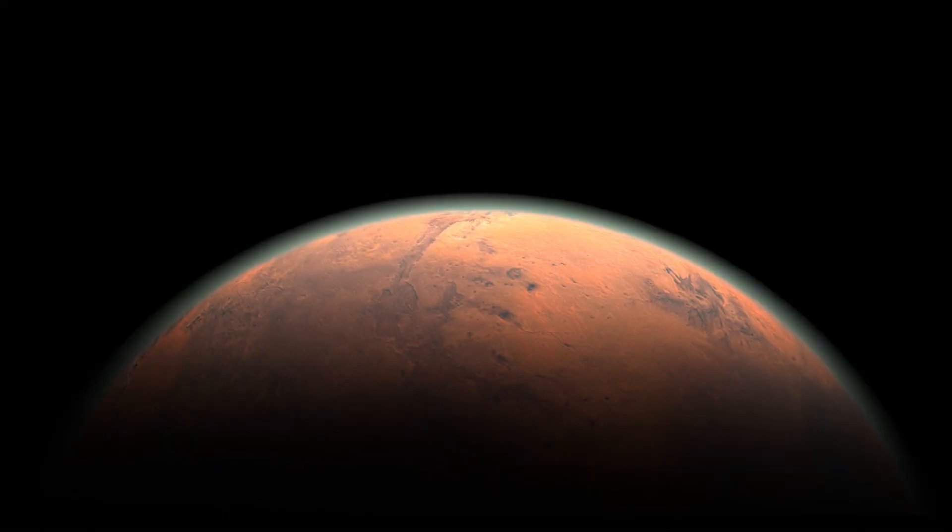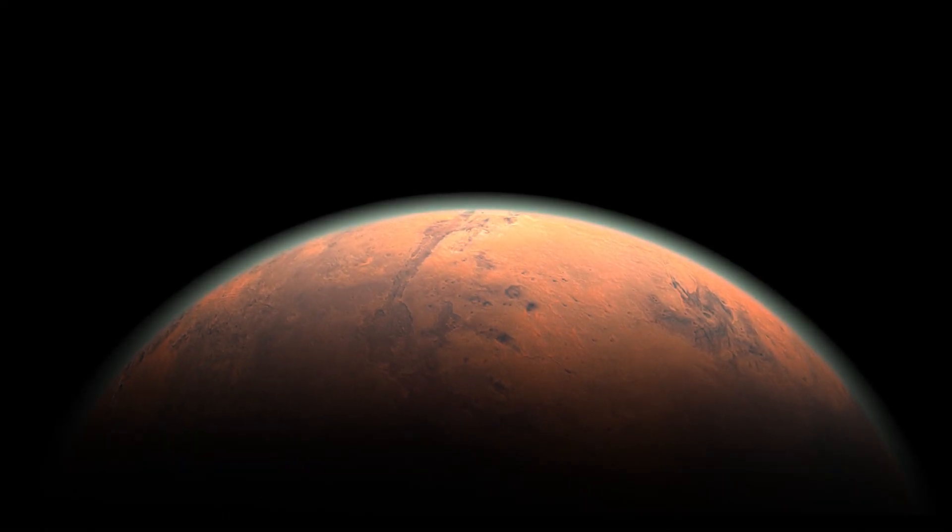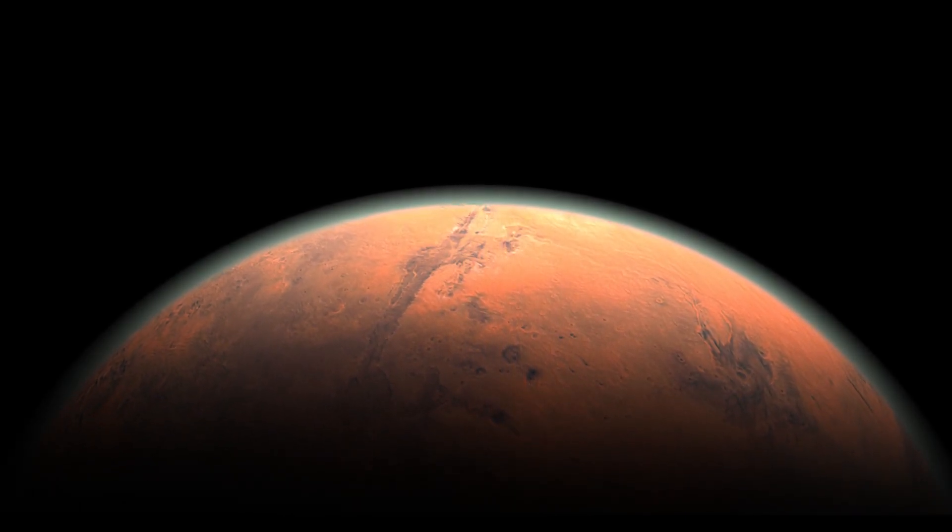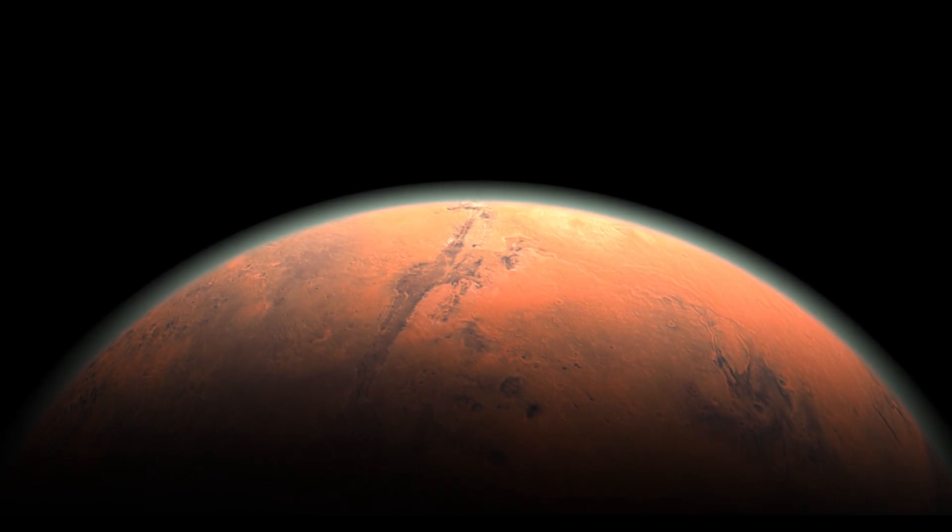What is Venus? Venus is the second planet from the Sun in our solar system. It is often referred to as Earth's sister planet because it is similar in size, mass, and composition.